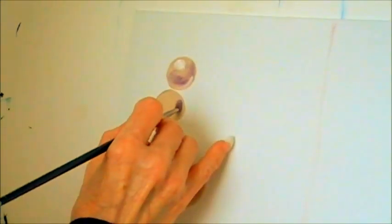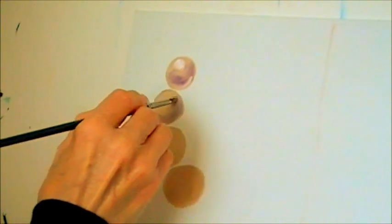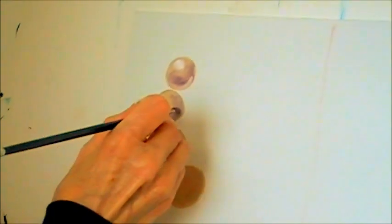Then we are going to do the same procedure with the next one. Put in like that. Make it like a ball here. Then reflected light, put in right there.